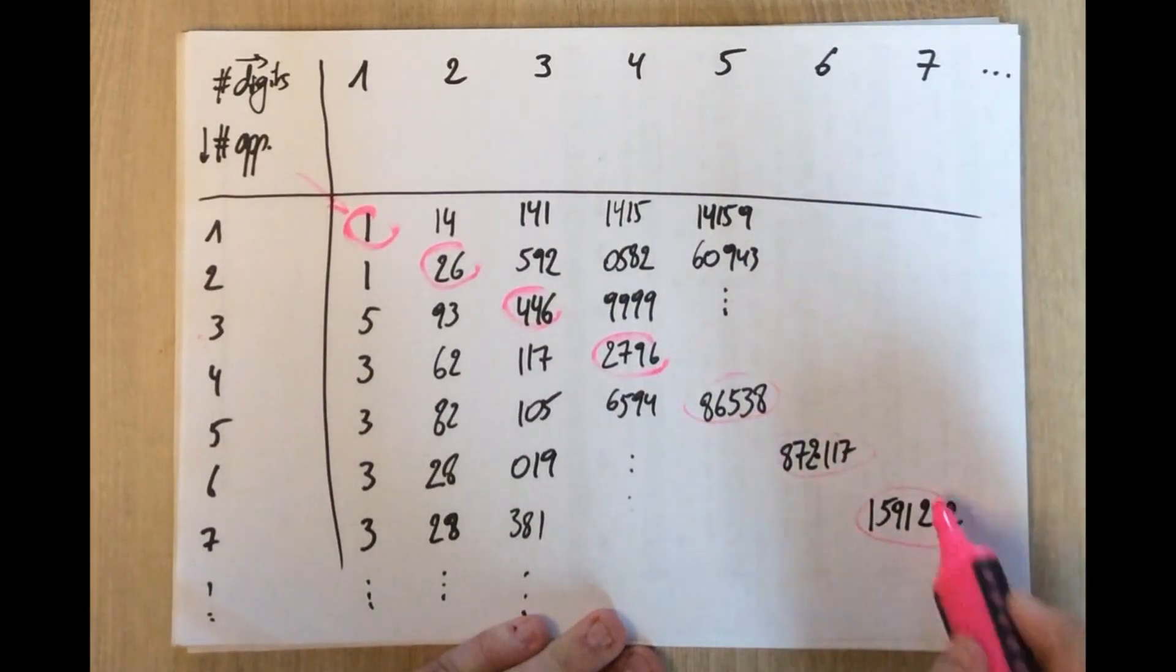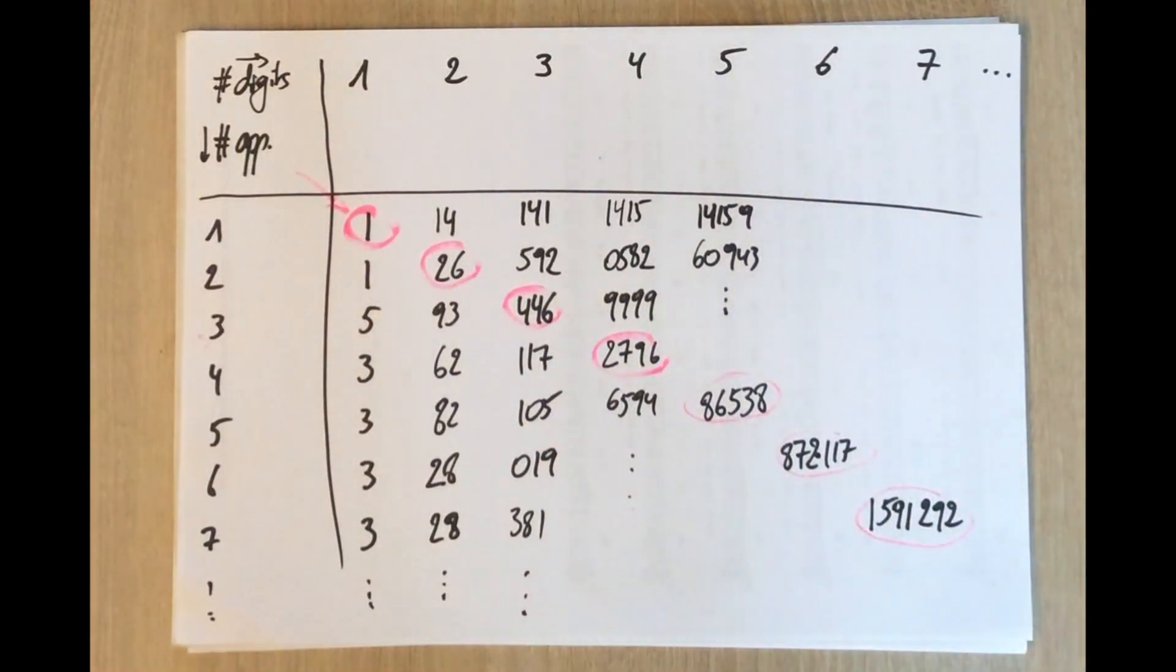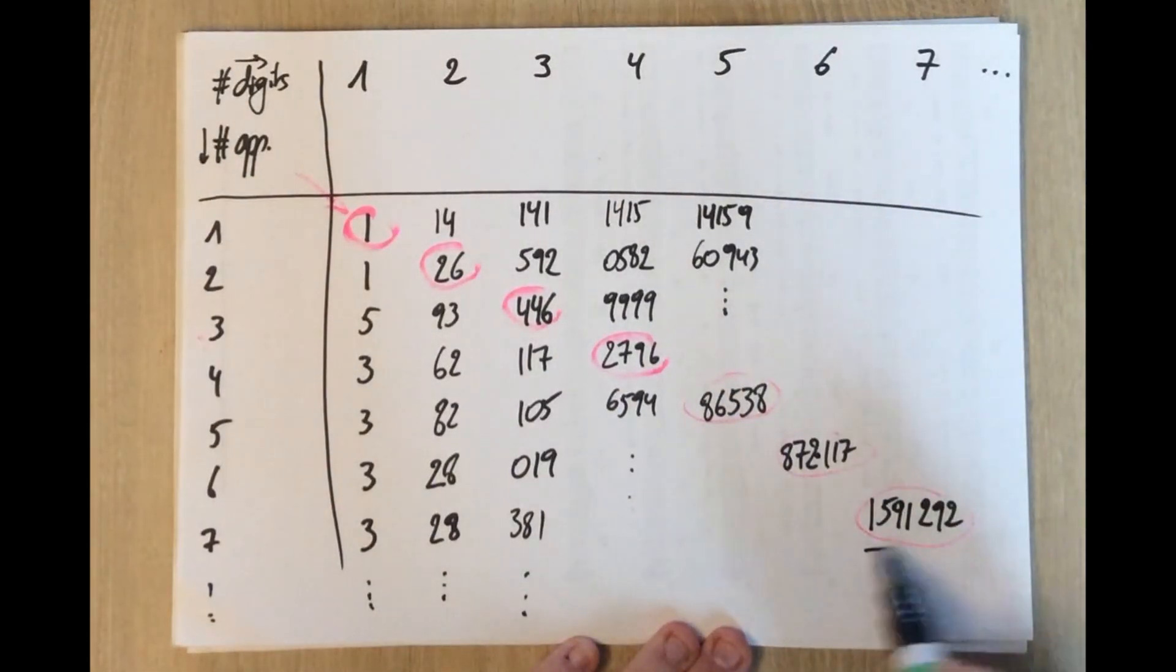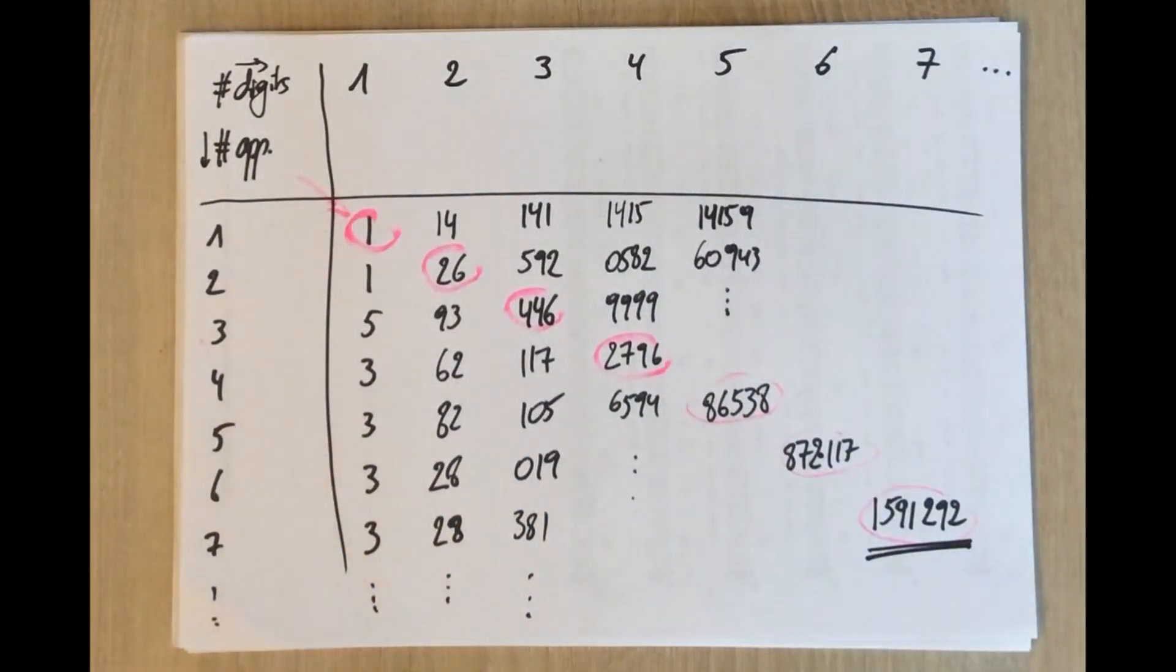Of course, we can fill in all the other empty spots in the table as well. But since the question was, what is your favorite number bigger than a million? The answer for me is 1,591,292 being the first seven-digit number, the first number bigger than a million, appearing seven times in the digits of pi.